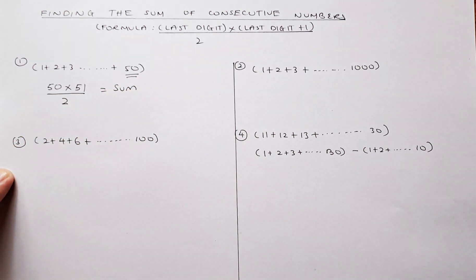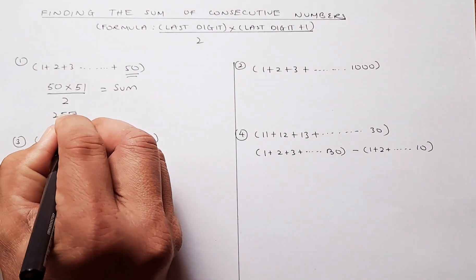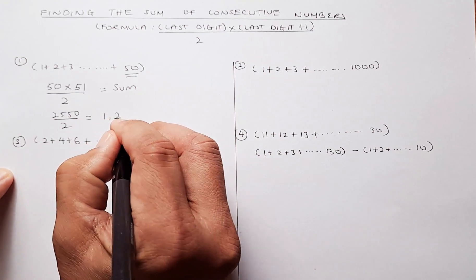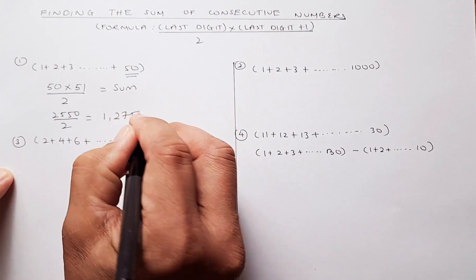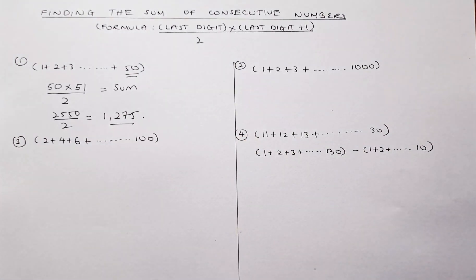If you put in your calculator, it's going to be 2,550 divided by 2 and the answer will come up to 1,275. So that is as easy as 1, 2, 3 rather than you punching in the numbers in the calculator.